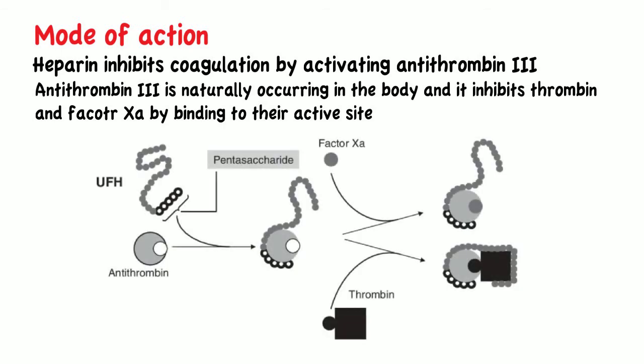Heparin binds to antithrombin via a unique pentasaccharide sequence. This changes its conformation and increases its affinity to the clotting factors. The inhibition of thrombin is achieved by unfractionated heparin and antithrombin-3 forming a ternary structure with thrombin.